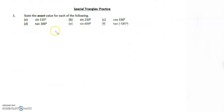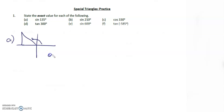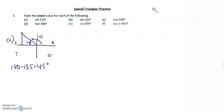So we have sine of 135. When I draw 135, it's in the second quadrant, which is the sine quadrant. So this is 135 degrees, and the related acute angle is 45 degrees. As soon as I see 45 degrees, I'm thinking special triangle. So if you want to draw the special triangles at the top of your page, I think it's going to help for you to reference.